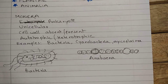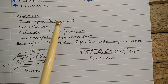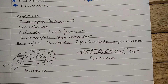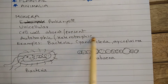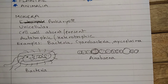Monera contains prokaryotes and unicellular organisms. Prokaryote means that the nucleus is not present — the nuclear membrane is not present, or in other words genetic material is not organized into a nucleus. Moreover, cell organelles are also absent. Cell wall can be absent or present, so in some organisms it will be present and in some it is absent.